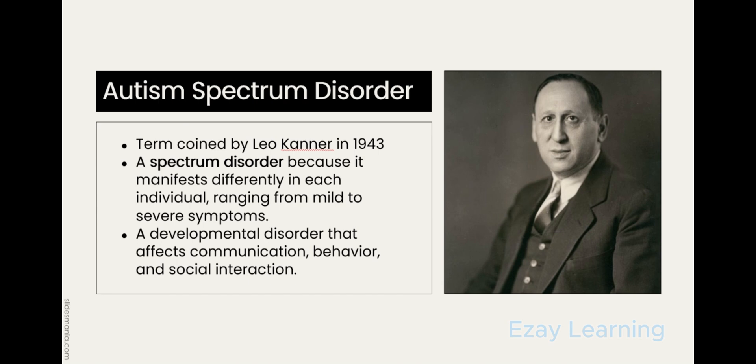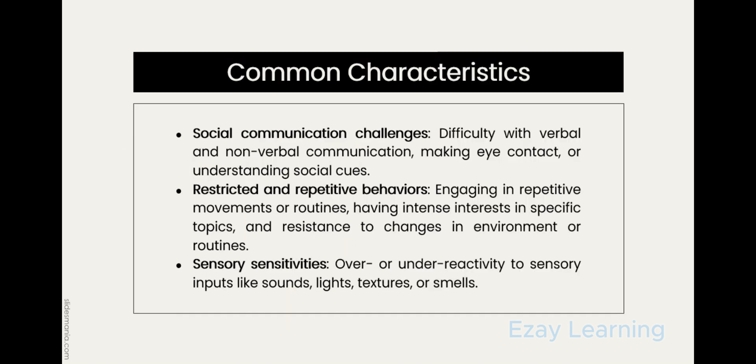Even if two different children have a mild level of autism spectrum disorder, the symptoms can vary between them. Autism spectrum disorder is a developmental disorder that affects three domains: communication, behavior, and social interaction. It is also known as the triad of autism.